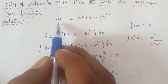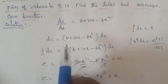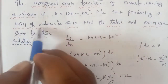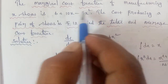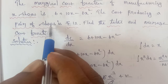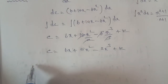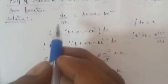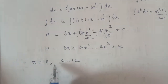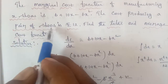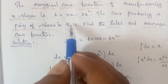So this is the total cost after integrating DC by DX. Now, we are given the cost of producing a pair of shoes is rupees 12, and the number of pairs is 2. So when X is equal to 2, C is equal to 12. We substitute these values to find the constant k.